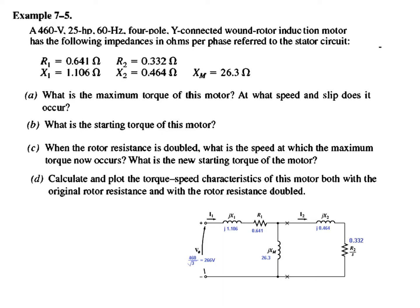I have drawn the equivalent circuit for the induction motor and plugged in all the values given — R1, X1, and all other values. I have also plugged in the voltage. Note that this diagram is a single-phase diagram. The voltage given in the question (460V) is line-to-line voltage, so we must convert it to line-to-phase voltage by dividing by √3. The phase voltage is therefore 266 volts.